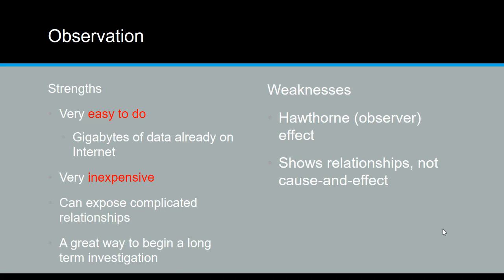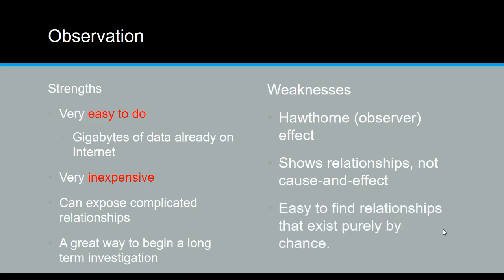Thinking about the weaknesses: you may observe something and kind of apply your own opinion to it. It shows relationships, but not necessarily cause and effect, which we will talk about in the next couple of examples. It can show relationships, but they could totally be by chance and have nothing to do with actual cause and effect.